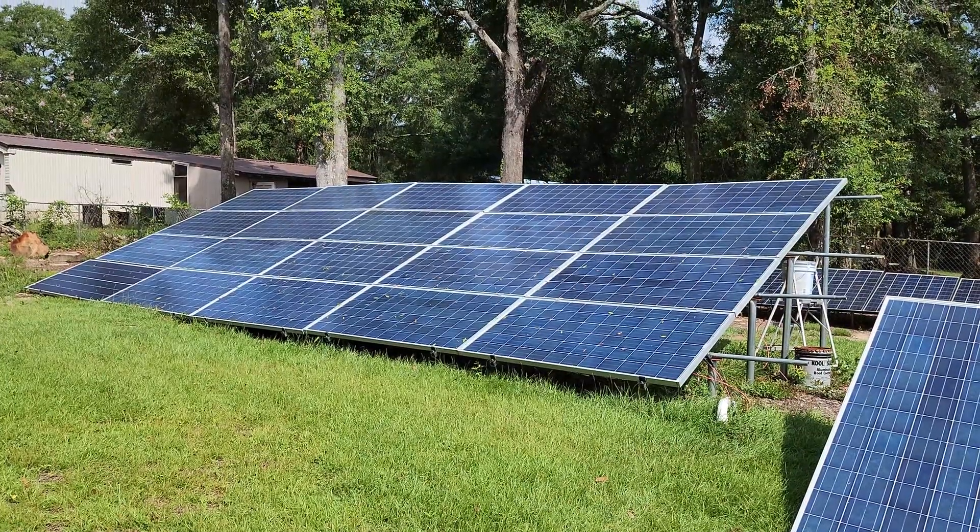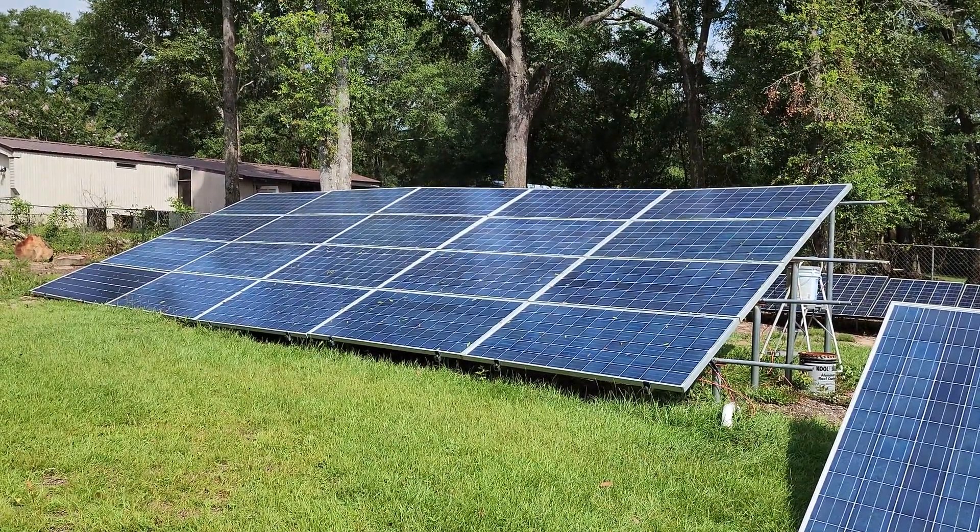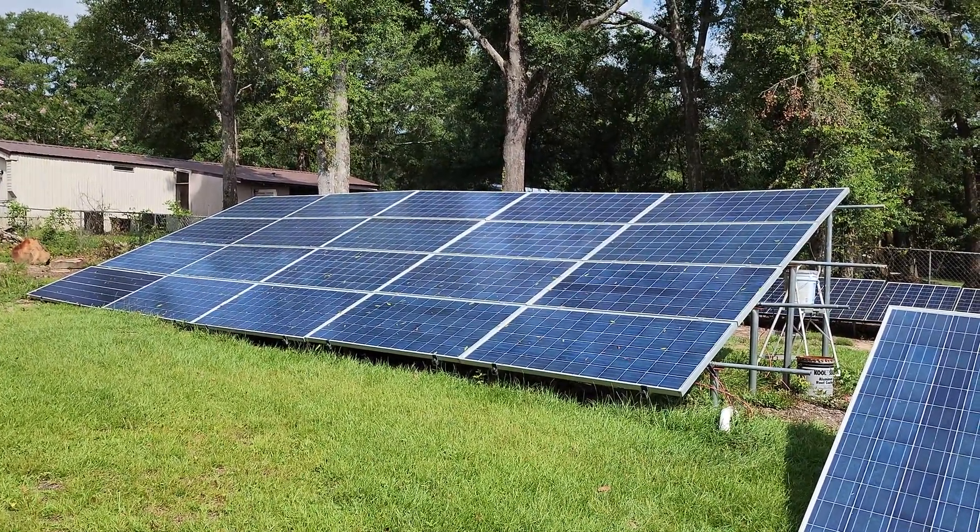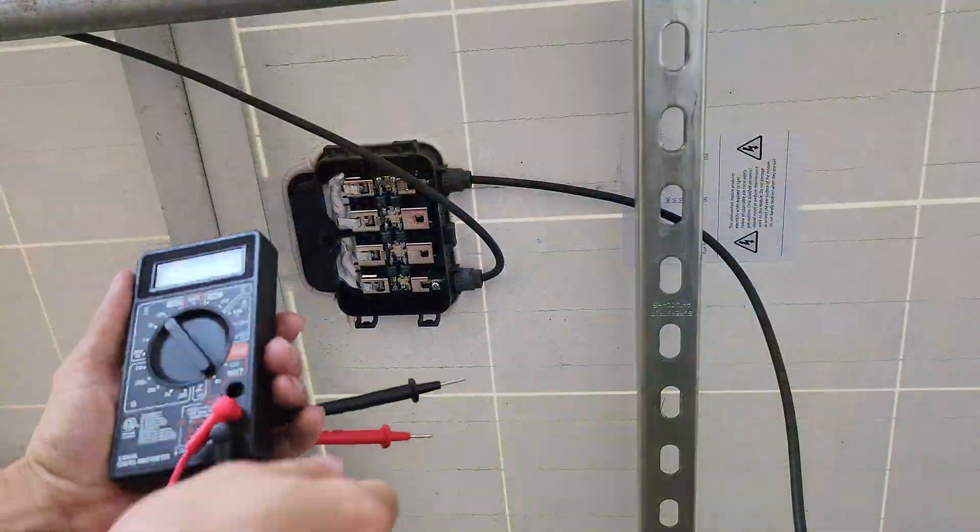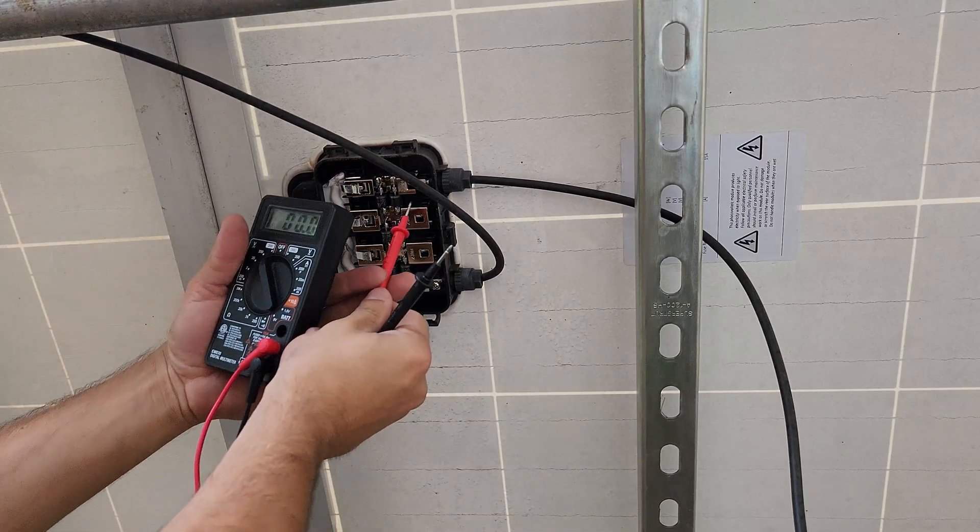Thanks to a recent lightning storm, the top row of my solar array is no longer putting out any power. The diodes in the junction boxes for the panels were fried from a nearby strike somehow, so we're going to go through and replace those.